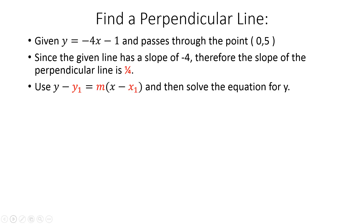Now let's look at finding a line that's perpendicular to the given line. We're given y equals negative 4x minus 1. All we need from that equation is the slope. Since it's in y equals mx plus b form, the slope for our given line is negative 4.